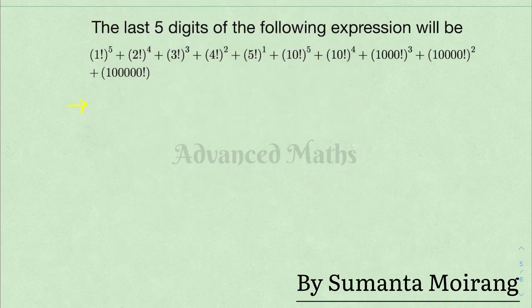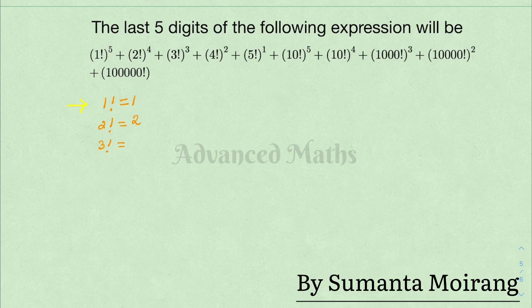1 factorial, 2 factorial, 2 factorial, 3 factorial — 3 into 2 gives 6. 4 factorial: 4 into 3 into 2 into 1 equals 24.